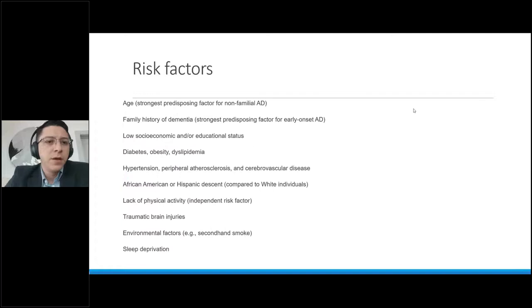And what are the risk factors that can predispose someone to develop Alzheimer's disease? Age is perhaps the strongest predisposing factor for development of Alzheimer's disease. A family history of dementia, especially for early onset Alzheimer's disease, low socioeconomic status, diabetes, obesity, hypertension. African Americans or Hispanic descent tend to have a higher risk when compared to the white cohort, lack of physical activity, TBIs, and environmental factors. If you see these risk factors, there are similarities, of course, with cardiovascular disease. And cardiovascular disease, of course, is a risk factor for cognitive deficits or decline.